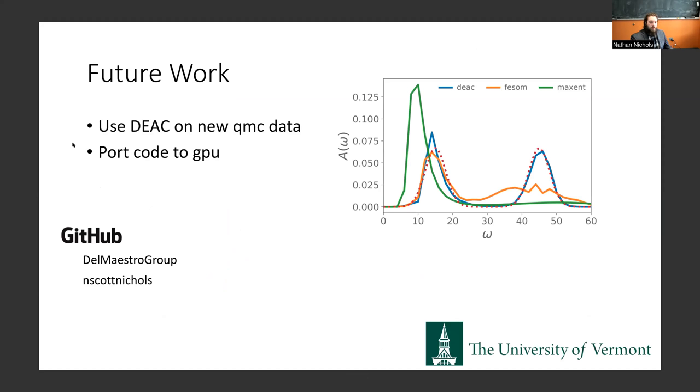For future work, we're planning on using this new differential evolution method on new quantum Monte Carlo data that we're collecting right now for some other projects. We're also planning on importing our code to the GPU. Our code's available now on the Del Maestro Group GitHub page, as well as my personal GitHub page. We've got more test cases and timings and more to come in active development. Thank you for your time.